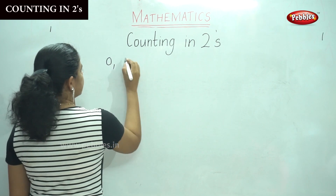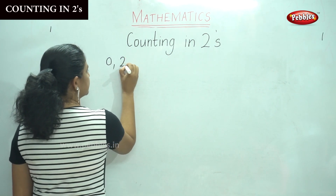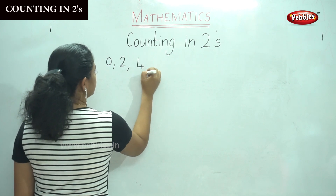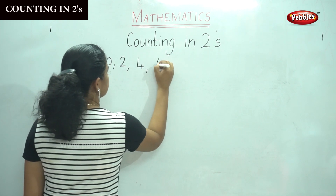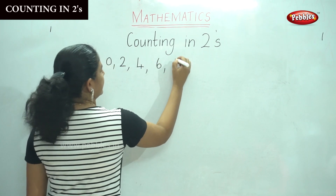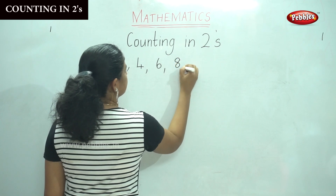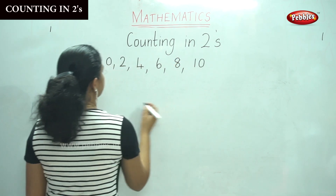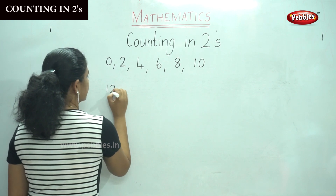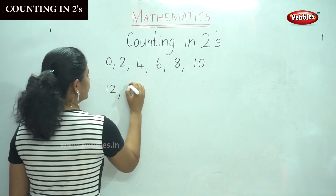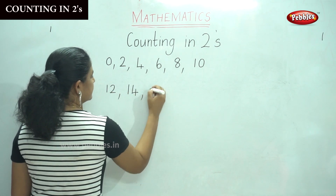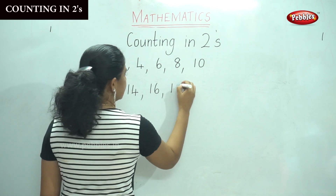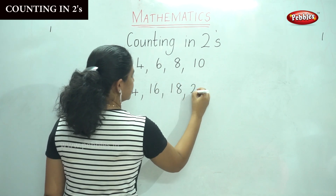Counting in twos, the next number will be number 2. 2, 4, 6, 8, 10, 12, 14, 16, 18, 20.